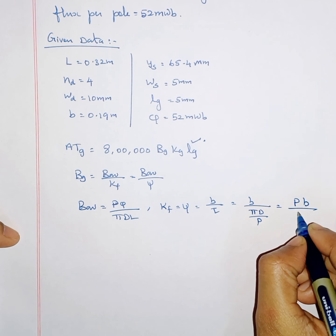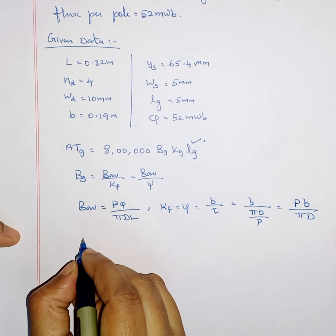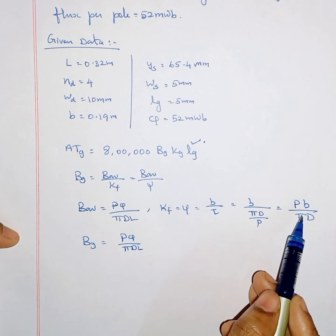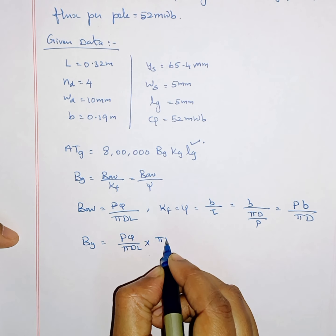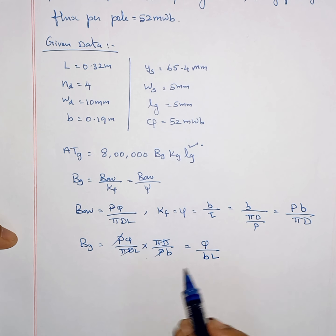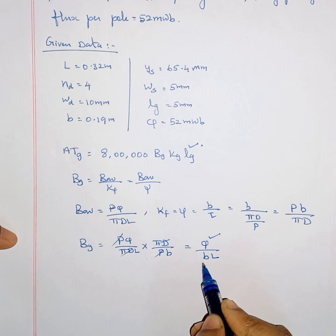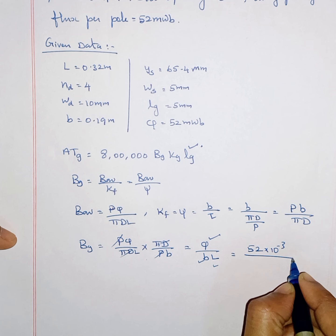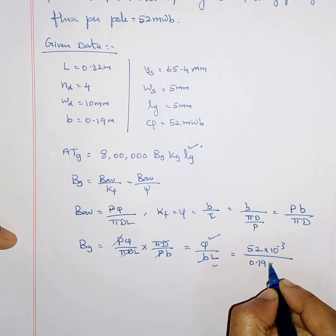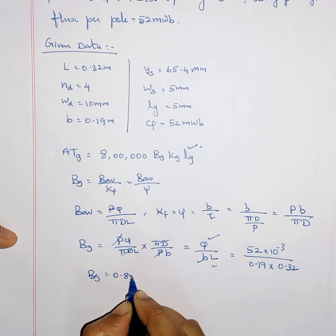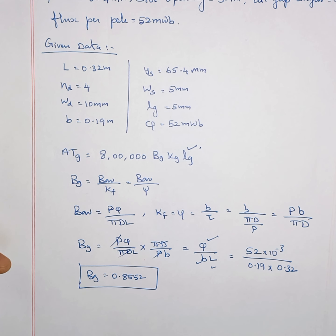Rewriting this, we get P·B divided by π·D·L, and the denominator psi is P·B divided by π·D, so we can rewrite this as π·D divided by P·B. The P·P gets cancelled and π·D·π·D gets cancelled, giving BG equals φ divided by B times L. Substituting: 52 into 10⁻³ divided by B value 0.19 and L value 0.32 — we get BG equal to 0.8552 Tesla.